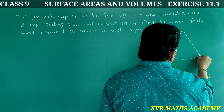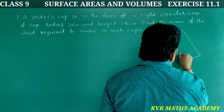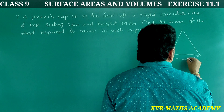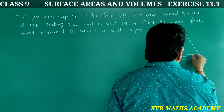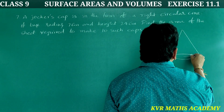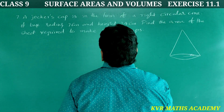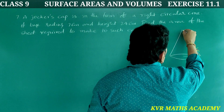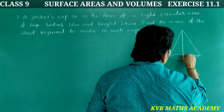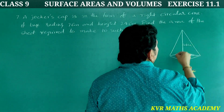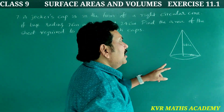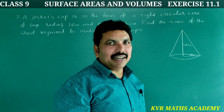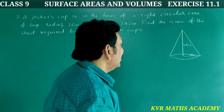So, the joker's cap is in the form of a right circular cone. Base radius is 7 cm, height is 24 cm. The first step is to find the slant height, then we find the curved surface area.